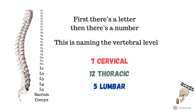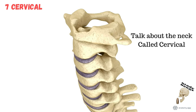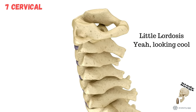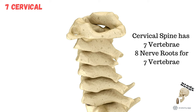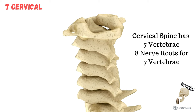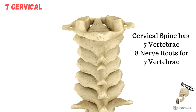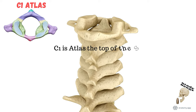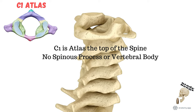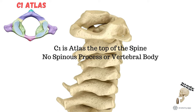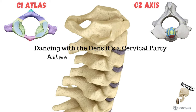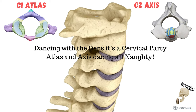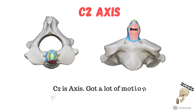7 cervical and 12 thoracic, 5 lumbar and 1 sacrum. Talk about the neck, called cervical — little lordosis, looking cool. Cervical spine has 7 vertebrae, 8 nerve roots for 7 vertebrae. C1 is atlas, the top of the spine, no spinous process or vertebral body. Dancing with the dens is a cervical party — atlas and axis, C2 is axis.